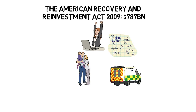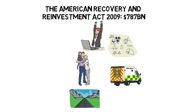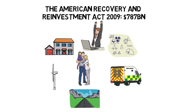In healthcare, $86.8 billion was allocated to Medicaid to increase funding for that program. In infrastructure, $27.5 billion was allocated to highway and bridge construction projects — direct spending into the economy. There was also $6 billion for renewable energies and electric transmission technologies. Finally, in housing, $4 billion was allocated to the Department of Housing and Urban Development for repairing and modernizing public housing.